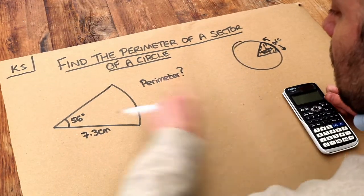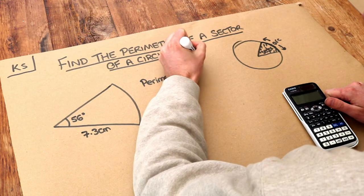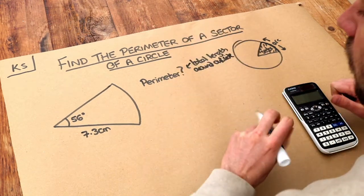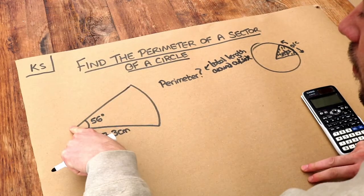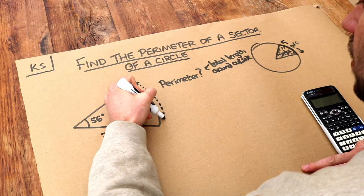So we want to find the perimeter. The perimeter is the total length around the outside. Now we've got three things to worry about here: this length, this length and that length. So we want to find the length of the arc first. What's this going to be?